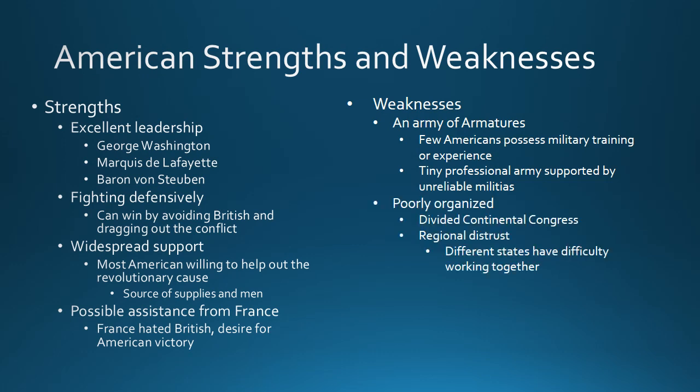The Americans were also poorly organized. The Continental Congress was pretty divided even after the Declaration of Independence, mainly because different states didn't always trust each other. For example, if South Carolina was called upon to support people up in New England, South Carolinians would often question why this was necessary. So even though they declared they were working together, there was still a lot of mistrust and lack of cooperation between the states.